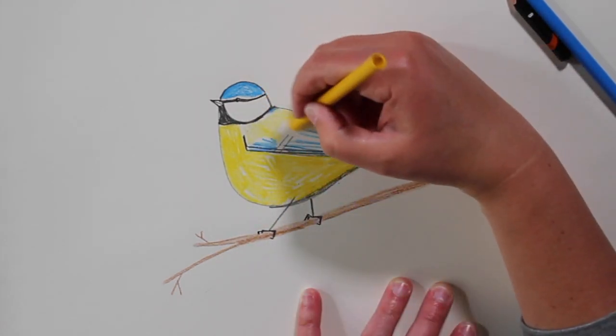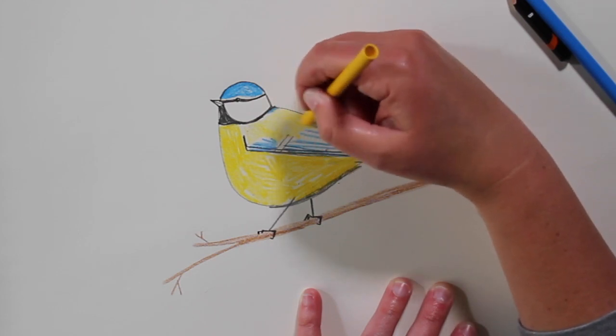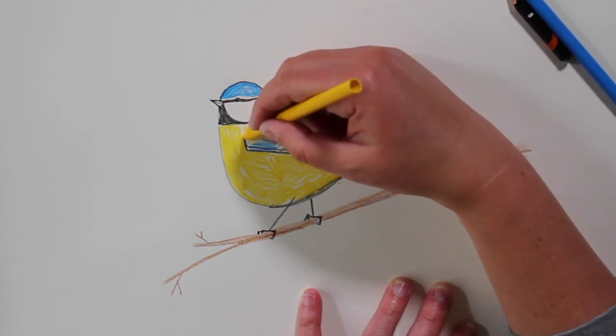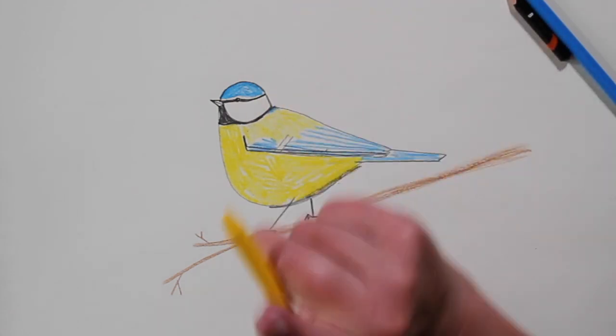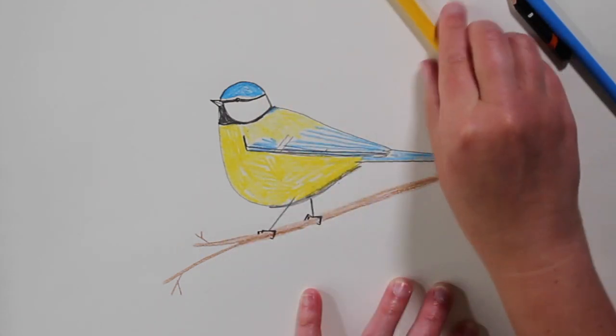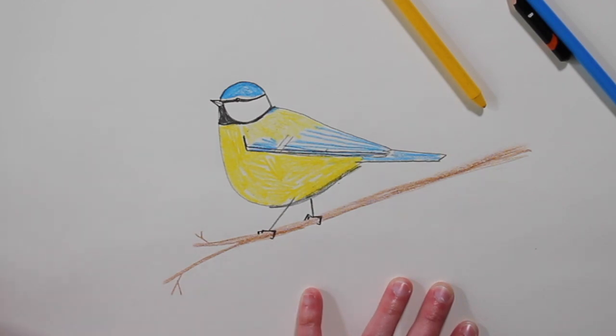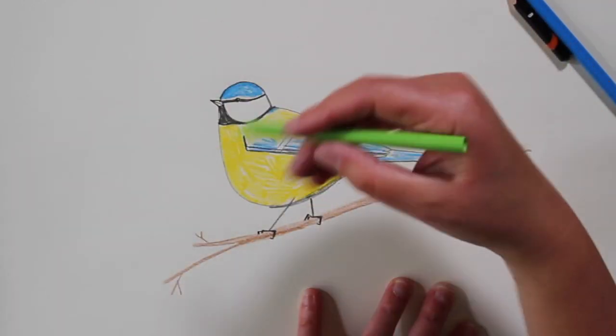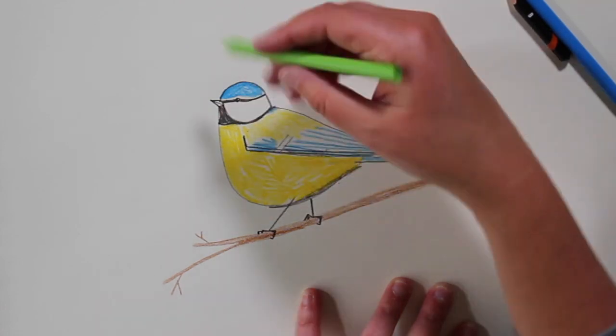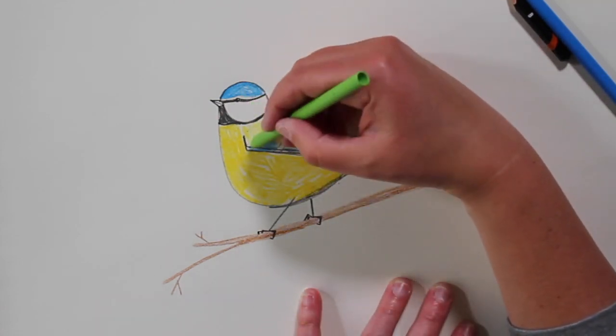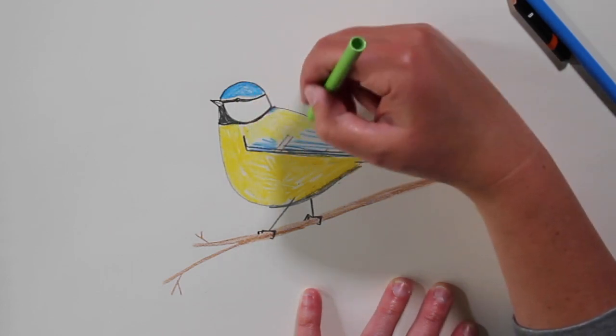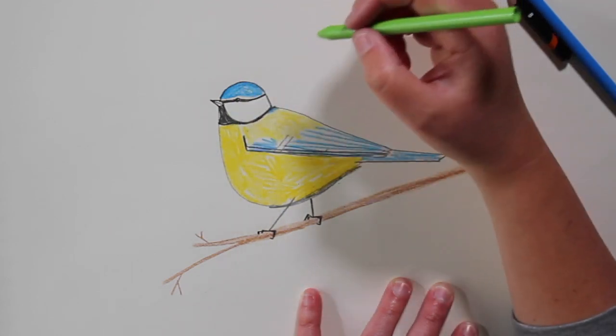And if you know what a blue tit looks like, you might be screaming at the screen just now, saying, what are you doing? They don't have yellow backs! You would be right. They don't have a yellow back, but they do have a sort of greeny, greeny yellowy sort of back. Where the very, very small feathers are. So I'm doing a very light area of yellow.